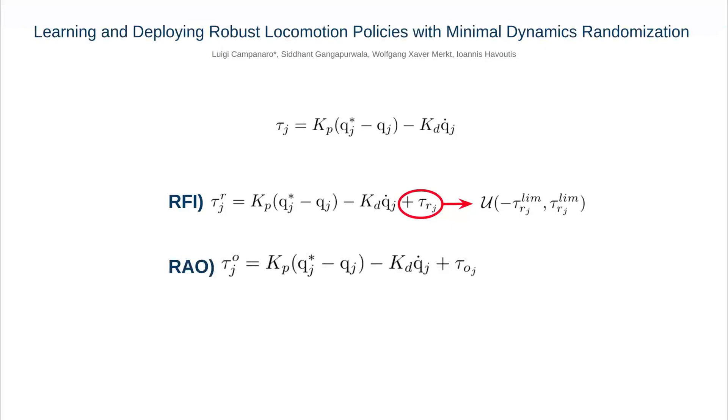Based on the same principles of RFI, in this work we introduce the random actuation offset, which consists of adding a perturbation at the impedance control level by injecting a random feedforward torque.